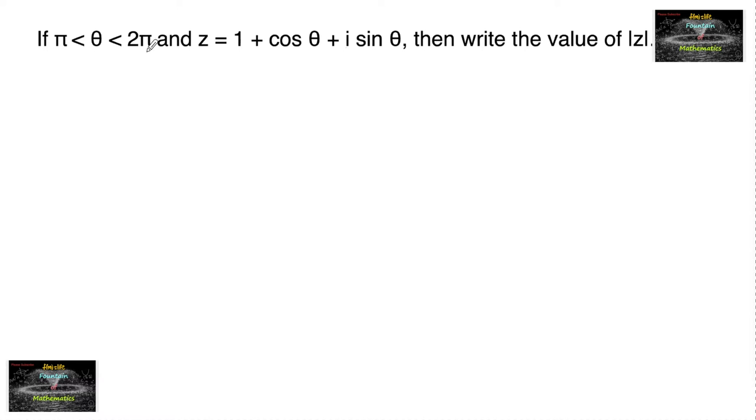If θ lies between π and 2π and z is equal to 1 plus cos θ plus i sin θ, then write the value of mod z.